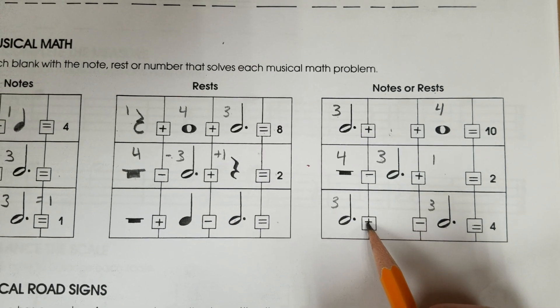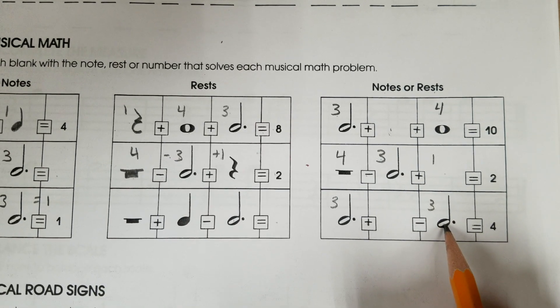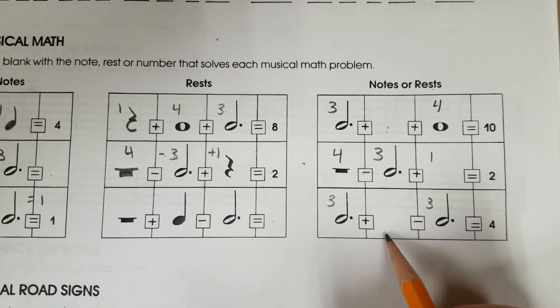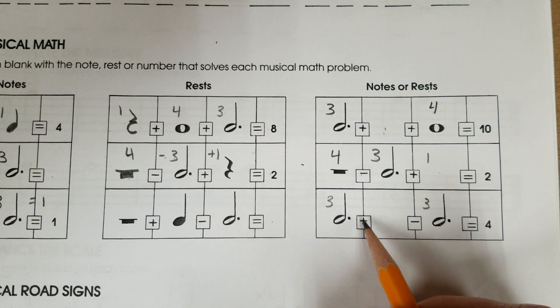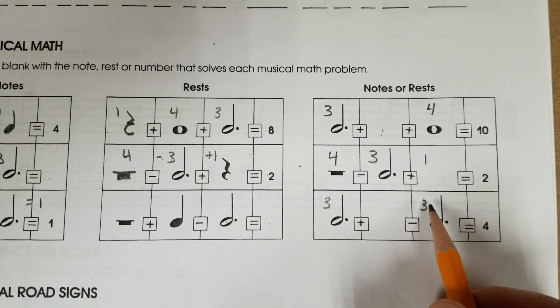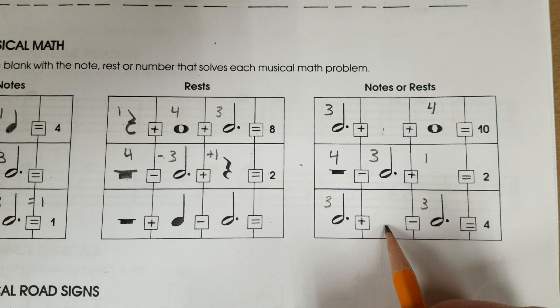3 plus what, minus 3 equals 4. We need something that equals 4 beats in here, because 3 plus 4 will get us 7. 7 minus 3 is 4. In this box, draw a note or a rest that equals 4 beats.